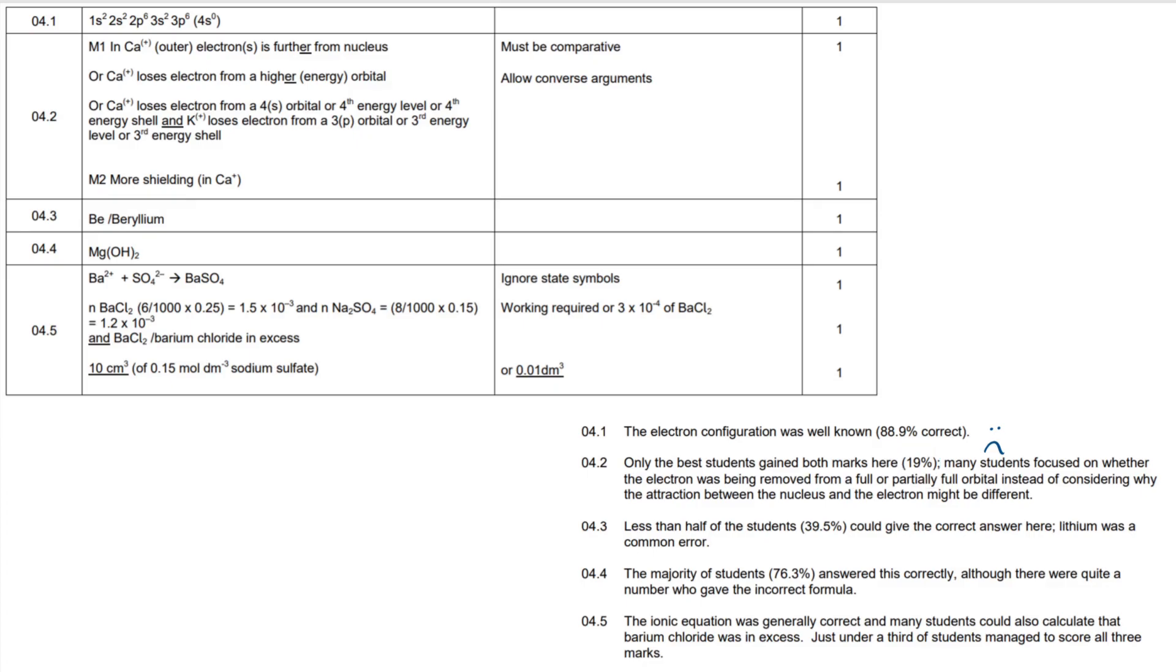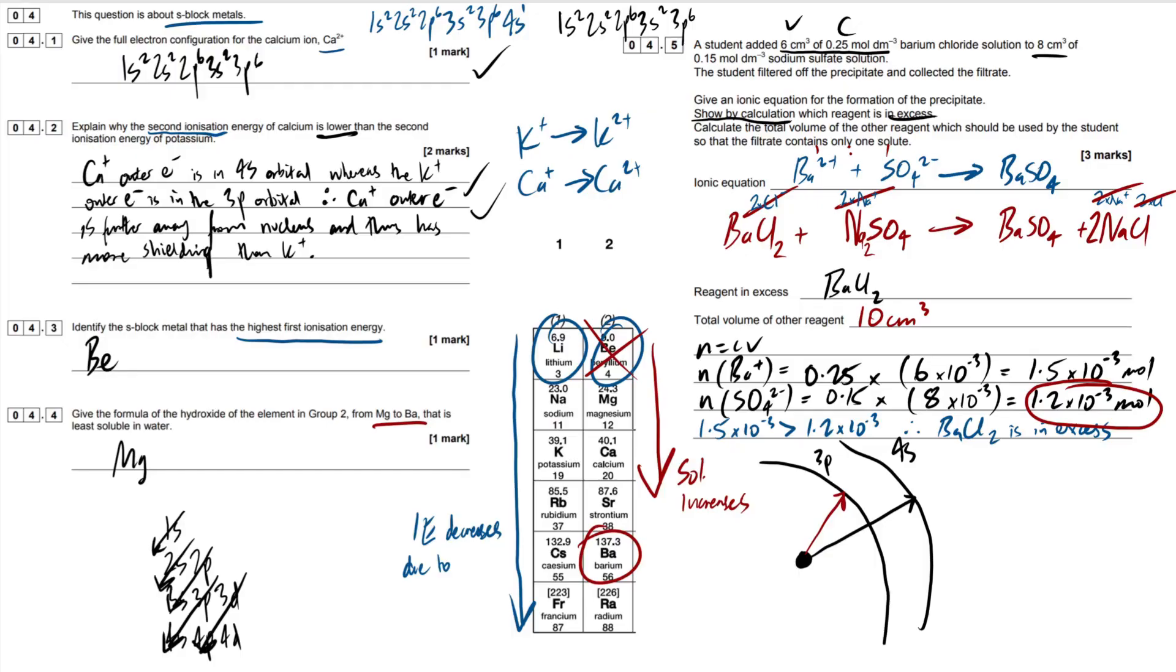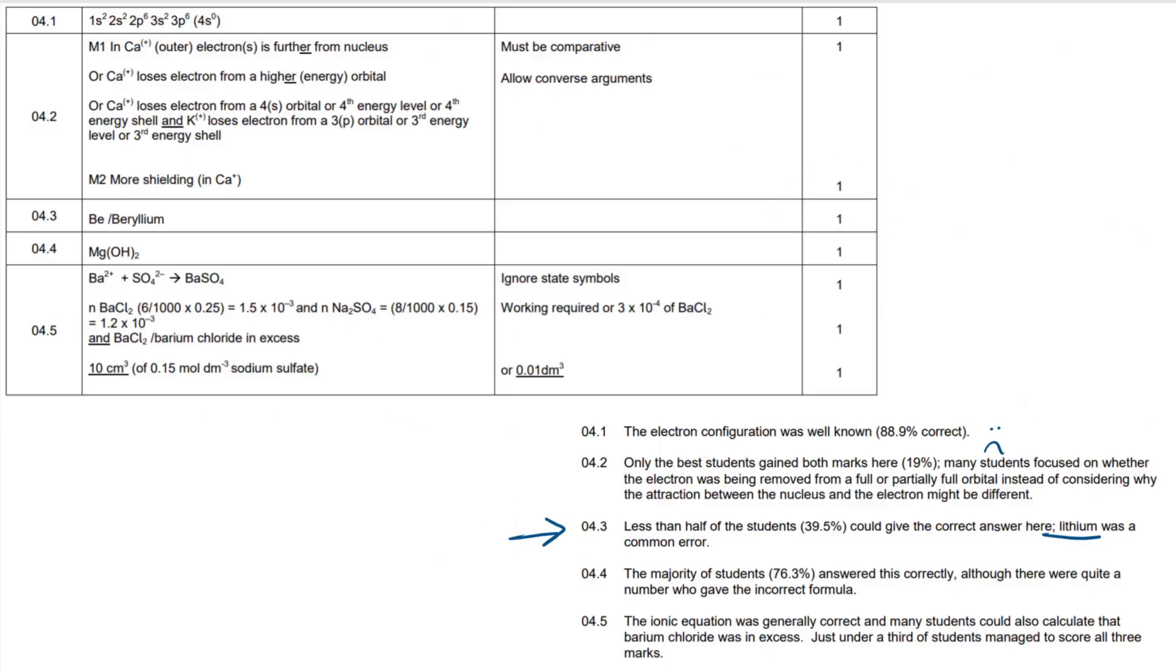And 19%. I'm not sure why people struggle with that so much. I suppose it's just such a boring topic. They can't be asked to revise it. So next one then. 4.3. Less than half of the students, 39.5 could give the correct answer here. Lithium was incorrect. Lithium was the common one. So I suppose they remembered that the ionization energy decreases. However, they didn't remember that this has an extra proton. Therefore, its attraction is higher. So it's going to have a higher ionization energy. What's next then? I'm going to skip 4.4 because most people got that.